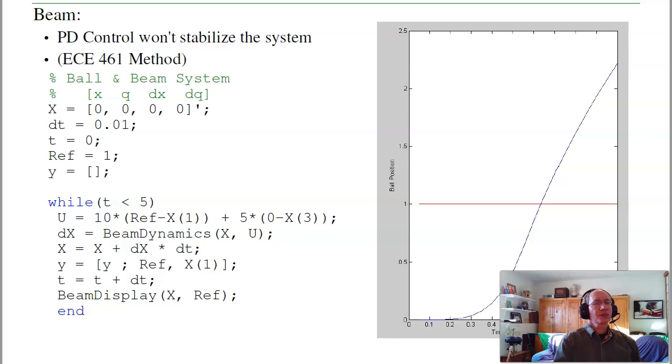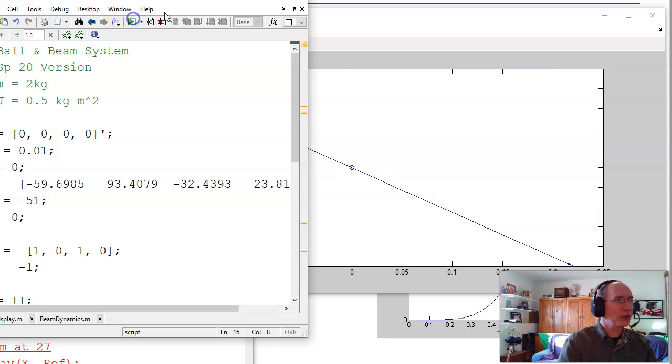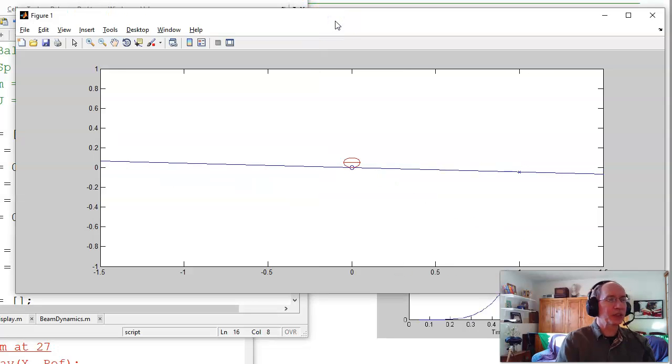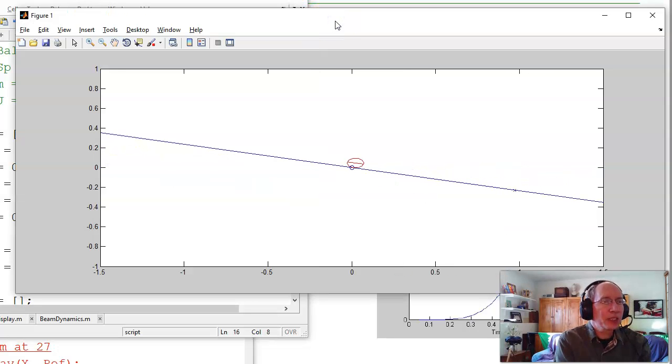If I want to control this system, I need to come up with a different feedback control law. PD control doesn't work. For example, if I try PD control, here's what happens. I want the ball to roll right, so I tilt the beam down, and it just falls. It's unstable. You can try various PD controllers, but with an unstable pole and two poles on the jω axis, it ain't gonna work.